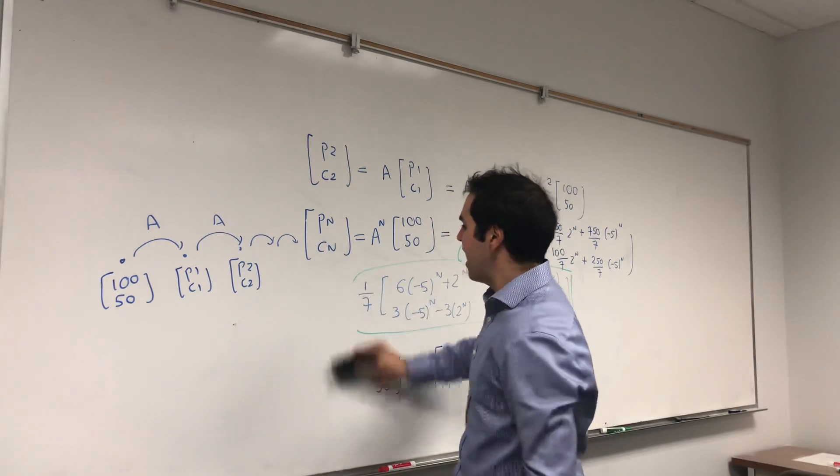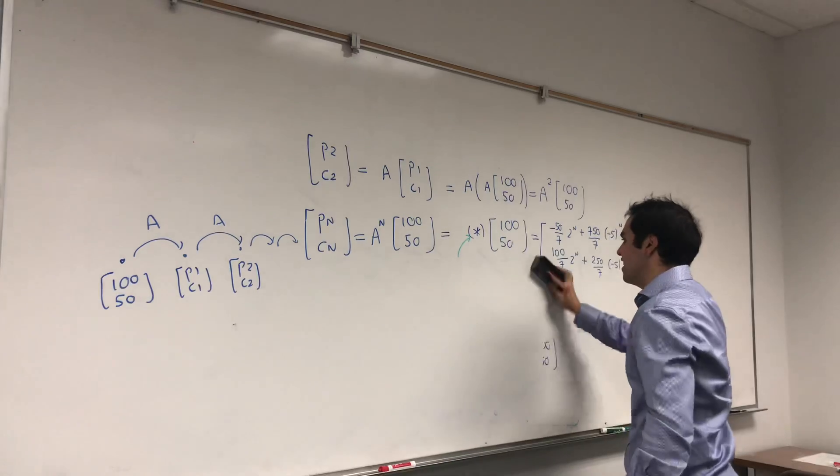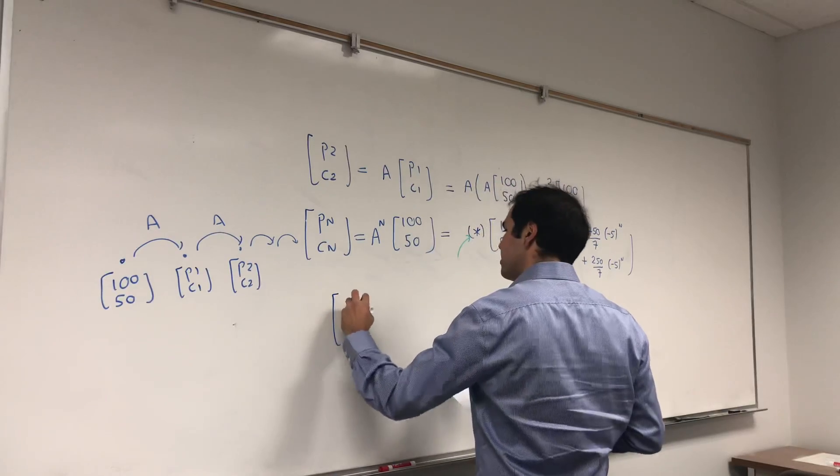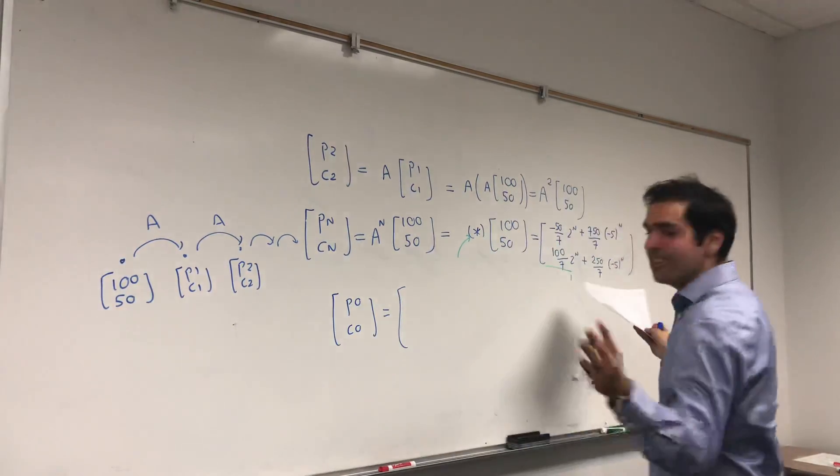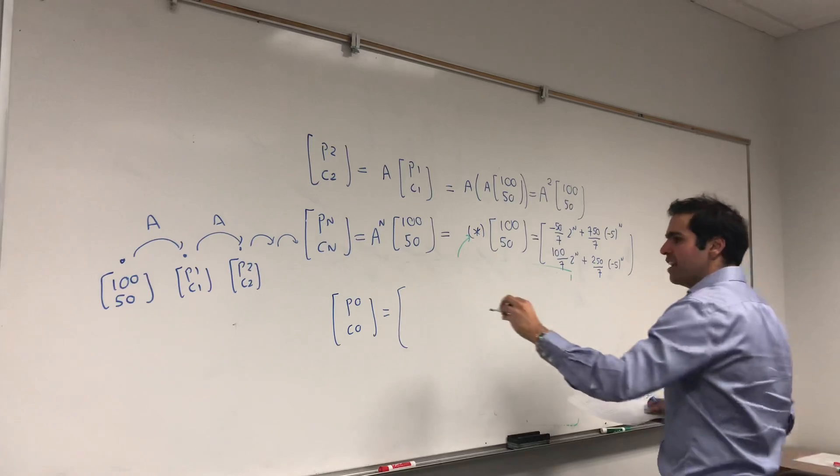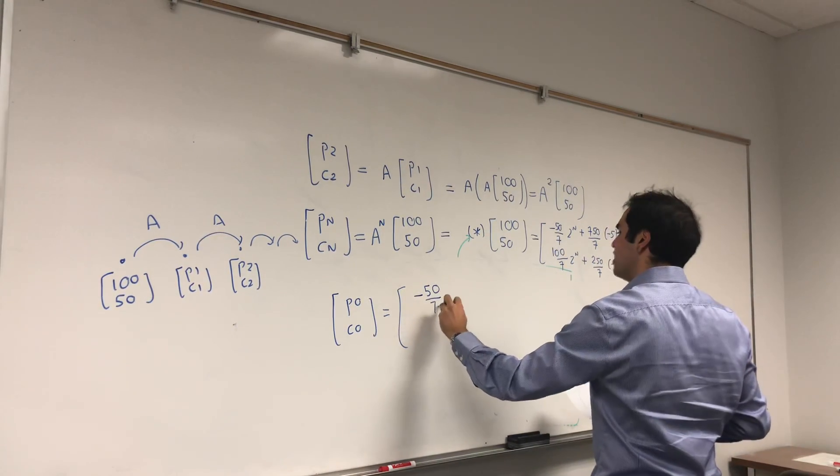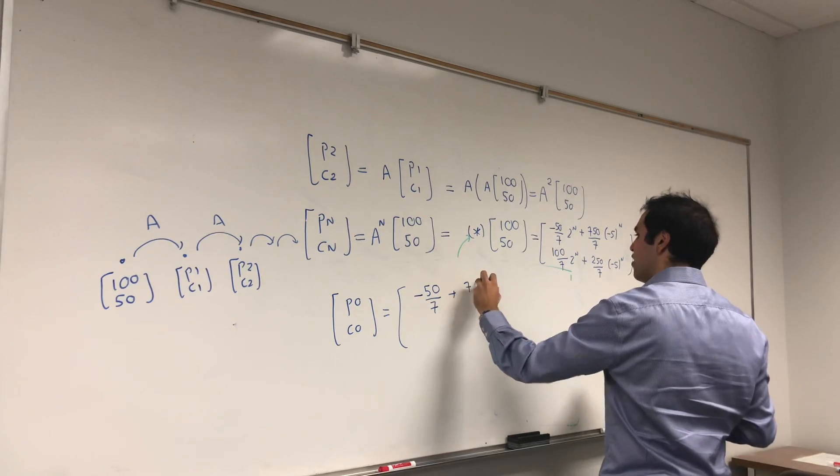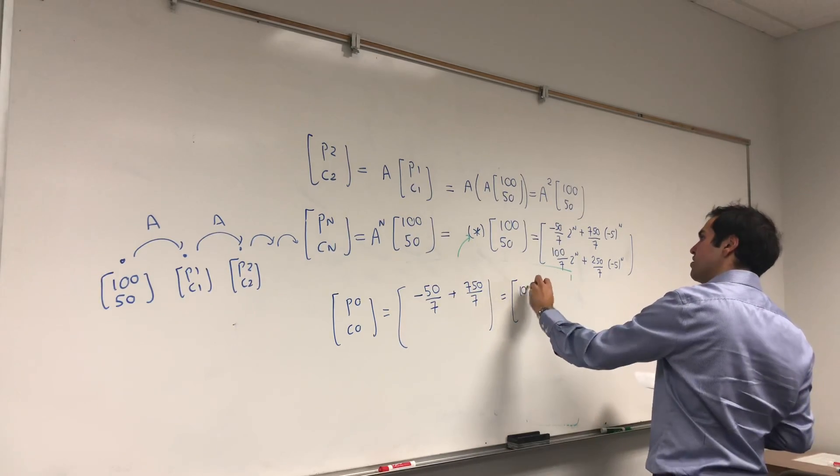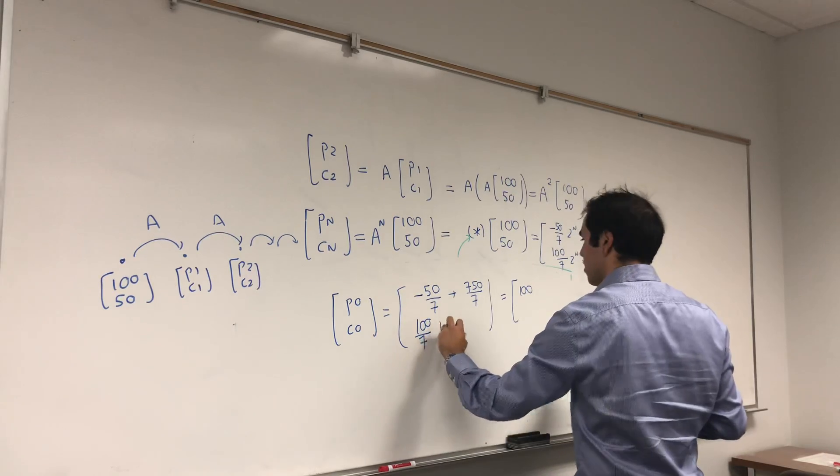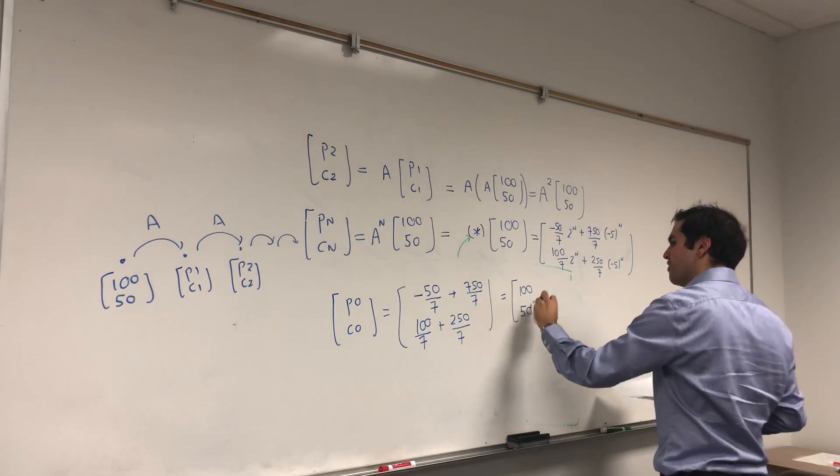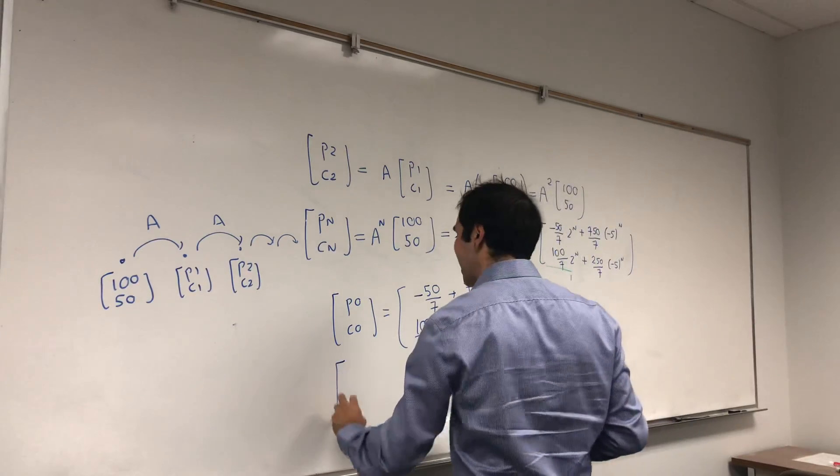In other words, given that recursive formula for Pn and Cn, now you actually have an explicit formula, one that gives you the HP of Pikachu and Charmander at every round. And so, let's now calculate the first couple of values of Pn and Cn, and let's see who wins or loses first. So, now, P0, C0. Well, let's see. And again, you should know the answer. It should be 100, 50, but let's just verify that with this formula. So, it's minus 50 over 7, 2 to the 0, which is 1, and then 750 over 7, which is indeed 700 over 7, which is 100. And similarly, 100 over 7 plus 250 over 7, it's 350 over 7, which is 50. So, this does work.